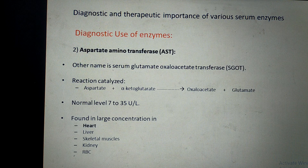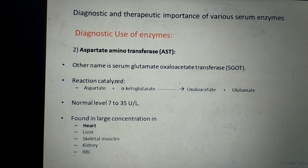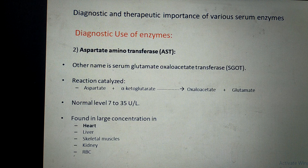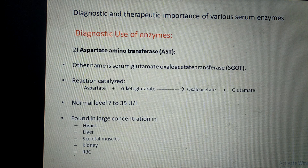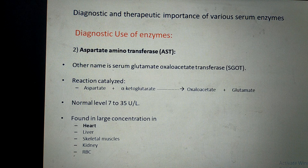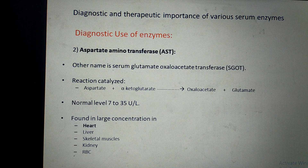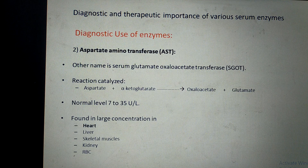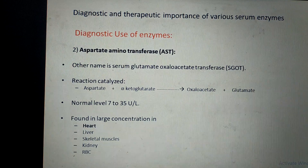The second enzyme is Aspartate Aminotransferase, or AST. Its old name is SGOT — Serum Glutamate Oxaloacetate Transferase. It catalyzes the conversion of aspartate plus alpha-ketoglutarate into oxaloacetate and glutamic acid. Its normal level is 7 to 35 units per liter. It is found in large quantity mainly in the heart, followed by liver, skeletal muscles, kidney, and RBCs. Disease or damage to these organs raises AST levels in blood, aiding diagnosis.